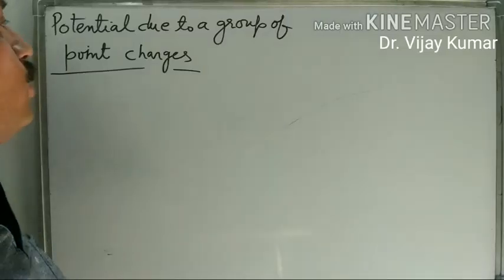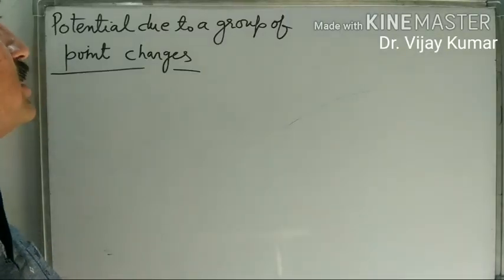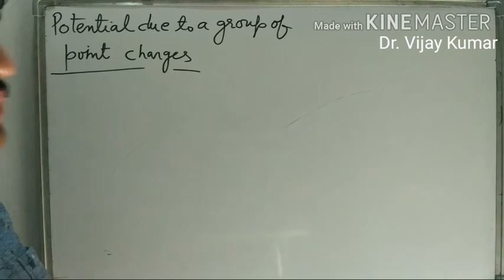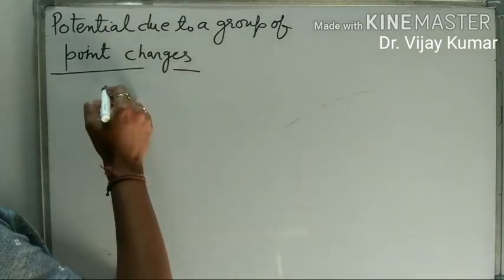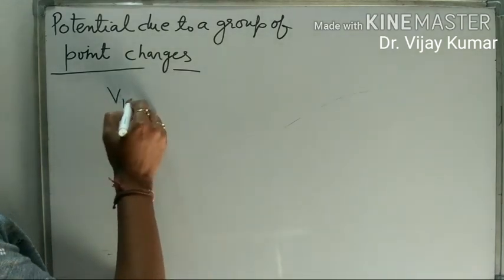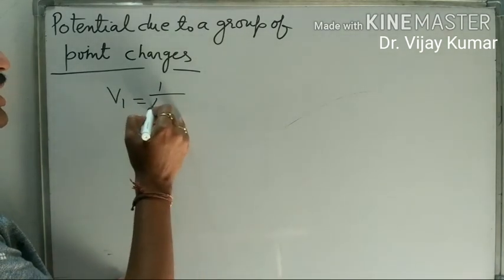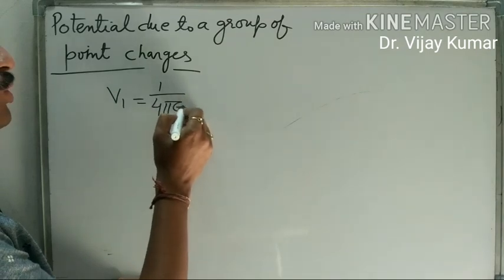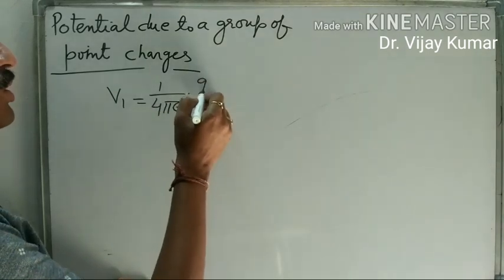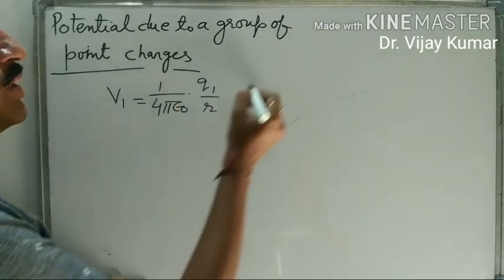Dear students, now we determine the total potential due to a group of point charges. Suppose electric potential due to a Q1 charge — it should be 1 upon 4 pi epsilon naught, Q1 upon R.